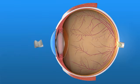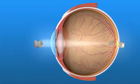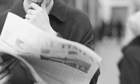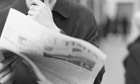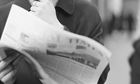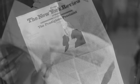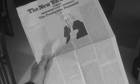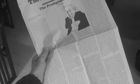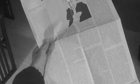As we age, our lens becomes less flexible and resists changing shape, so our ability to see up close is diminished. Usually, the first sign of presbyopia is the need to hold a newspaper or other reading material at arm's length to be able to read them.